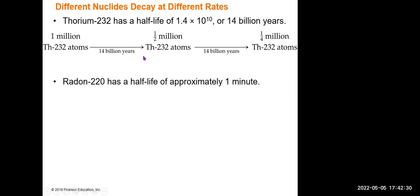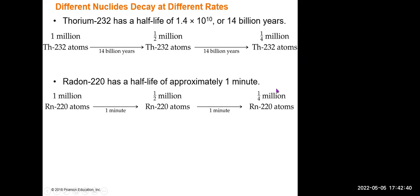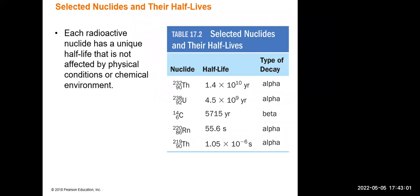Different nuclides have very different half-lives depending on the element. Radon-220 has a half-life of only about one minute — meaning one million radon-220 atoms would reduce to half a million in just one minute. This table shows various radioactive nuclides, their half-lives, and their decay modes — alpha or beta — ranging from billions of years down to just a few seconds.